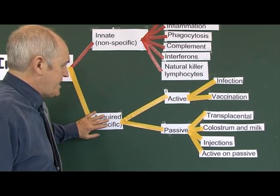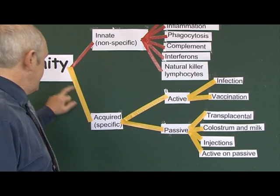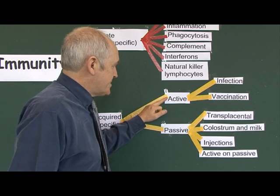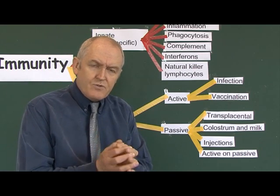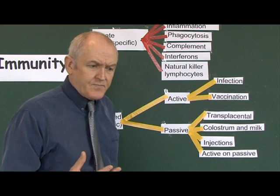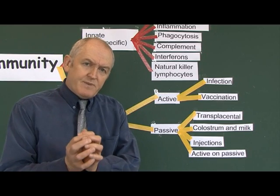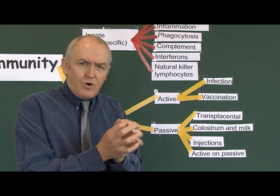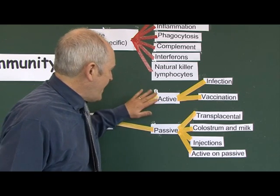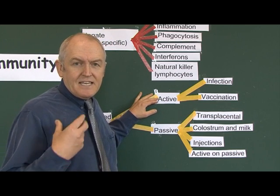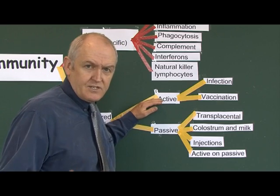Acquired specific immunity is classically divided into active acquired immunity and passive acquired immunity. All acquired immunity depends on the formation of immune proteins called antibodies, or immunoglobulins. These antibodies are specific to combat a particular type of infection — the antigen, which is anything the body recognises as being foreign. With active immunity, your immune system has made its own antibodies to the specific antigen causing the infection.